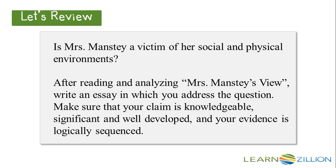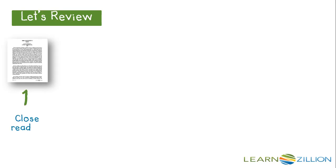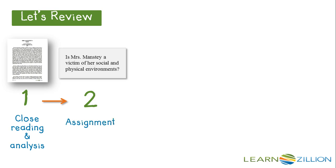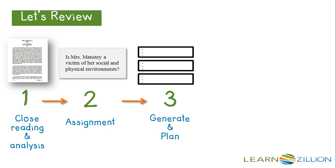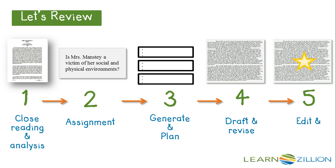We've been organizing our claims in preparation for an argumentative essay that addresses this prompt. Before we begin our lesson, let's review the writing process. First, we did a close reading of Mrs. Manstey's View. Then we looked at the prompt, or the assignment. The third step is to begin planning. After mapping out your plan, you move to step four, which includes crafting the draft and revising the paper. The final step of the writing process is the editing and publishing. We've already addressed the first three steps, so for this lesson we will spend time on step four: drafting our essay.